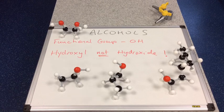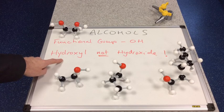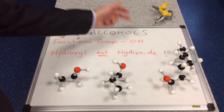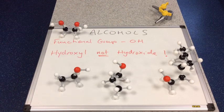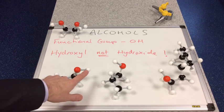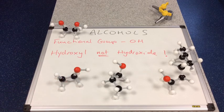This functional group is called the hydroxyl group. We've seen OH before in unit one, but we've seen OH minus, not OH. So a common mistake would be to call this the hydroxide group — it's not a hydroxide group, it's called a hydroxyl group.